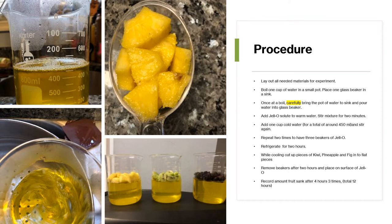I repeated this procedure twice to get three different 800 milliliter glass beakers of gelatin. Once all three mixtures were made, I placed them into the fridge for two hours. After cooling, I took them out and prepared the fruit to be placed on top of the gelatin. I cut the fig, kiwi, and pineapple into flat pieces so they would sit flat on top. I then waited and timed four hours, three different times, for a total of a 12-hour observation period, measuring how far the fruit sank down into the gelatin.